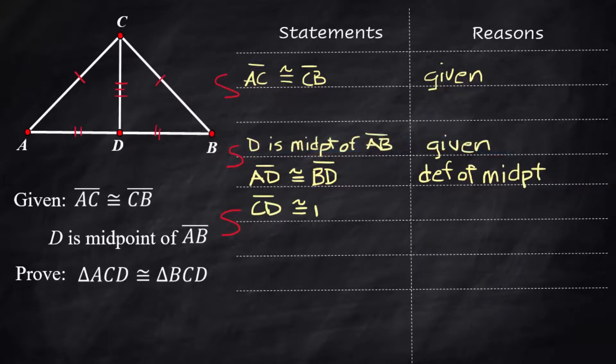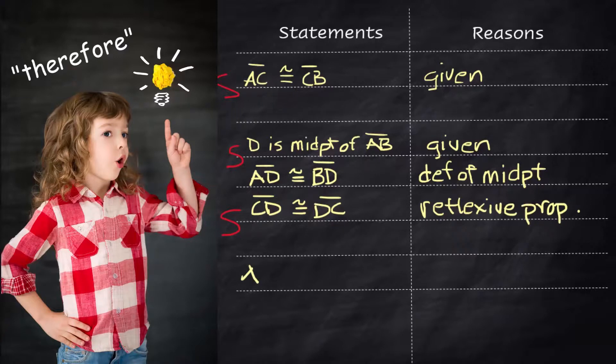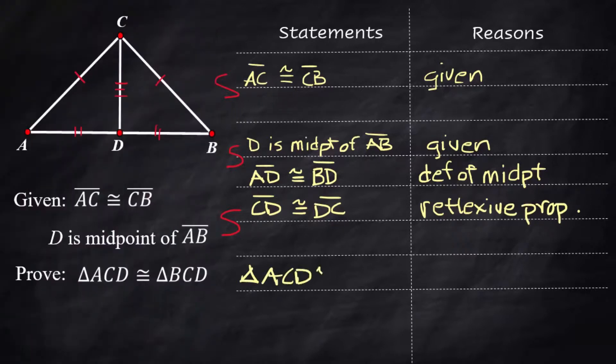The third side CD is congruent to DC and that's the reflexive property. Therefore triangle ACD is congruent to triangle BCD and the reason is side side side triangle congruence theorem.